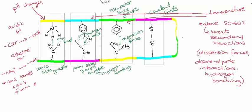Think back to the formation of ethanol via fermentation — there were specific conditions relating to pH and temperature that affected the enzyme. Enzymes are proteins, and those conditions relate directly to their structure and the possibility of the enzyme being denatured in certain environments. That is why enzymes are sensitive to pH and temperature.